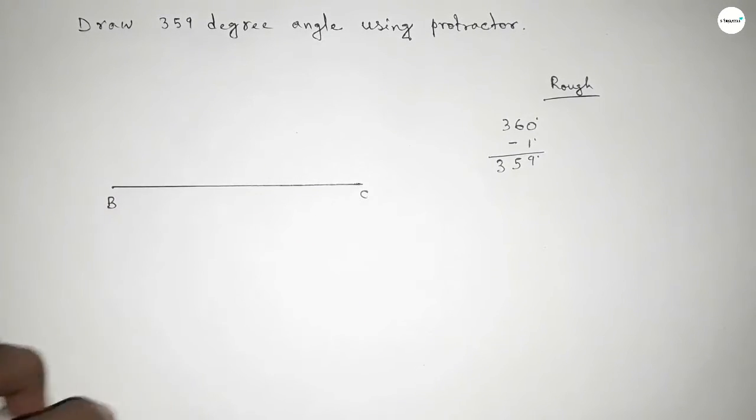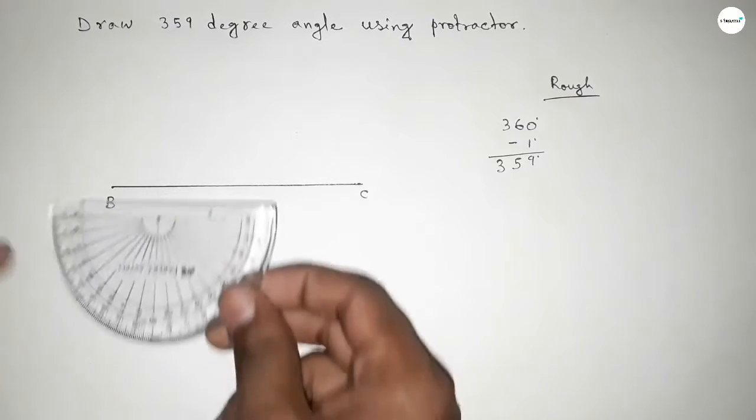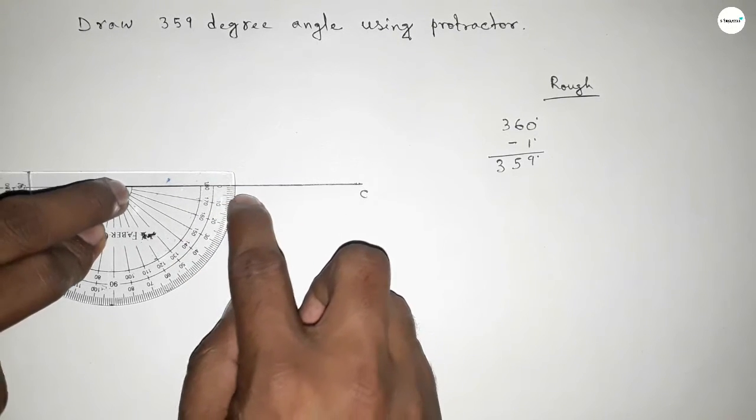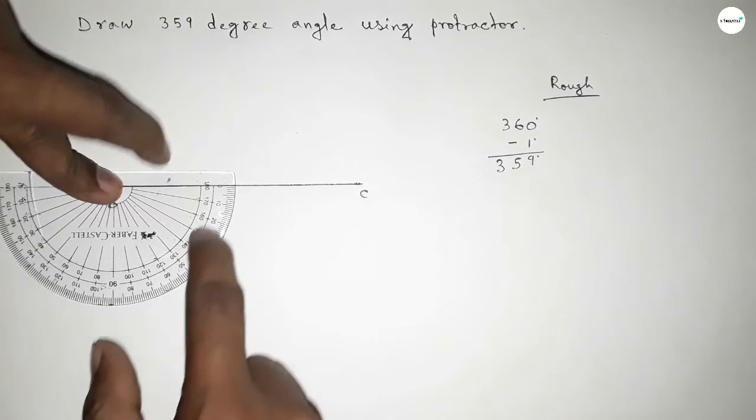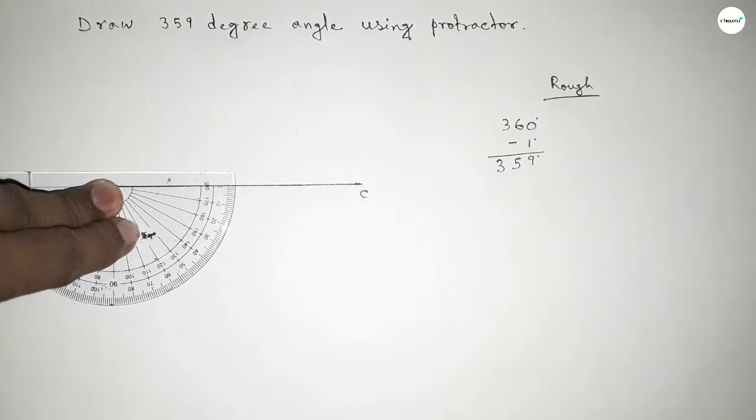And putting the protractor on point B again this way. So from this plus this, total 360 degrees.